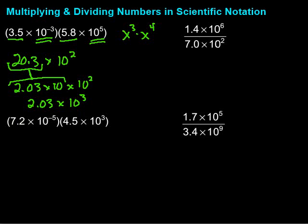Let's take a look at this next one. Very similar situation. We have two numbers, the only thing going on is multiplication. So I can multiply the 7.2 and the 4.5. That gives me 32.4. Then I multiply the 10 parts, so I have 10 to the negative fifth times 10 to the third. That's going to give me 10 to the negative second, adding those exponents.